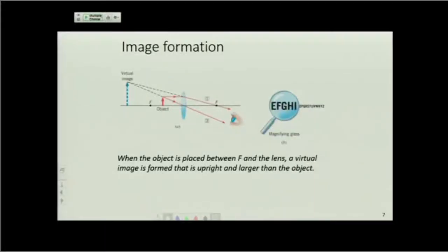If the object distance is less than the focal length, what happens here? Just think about it this way.